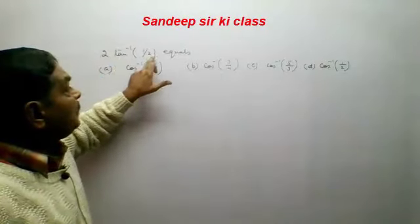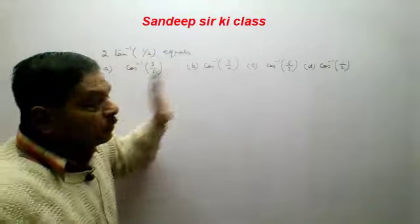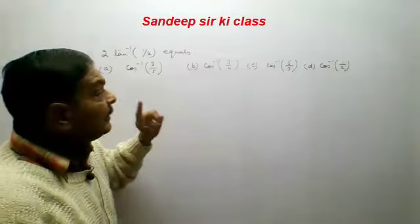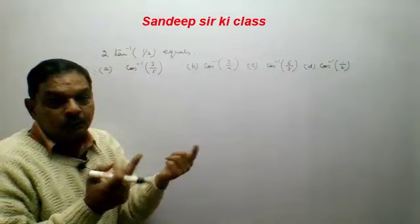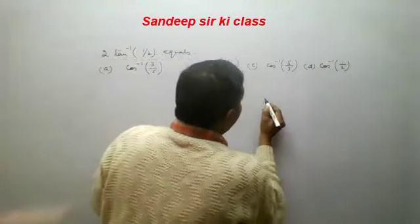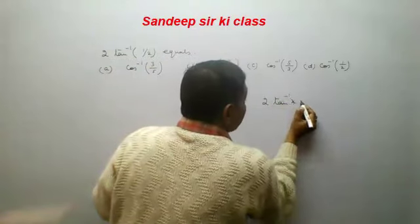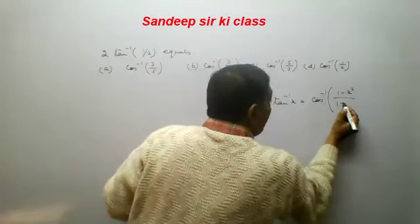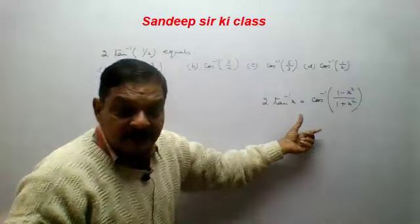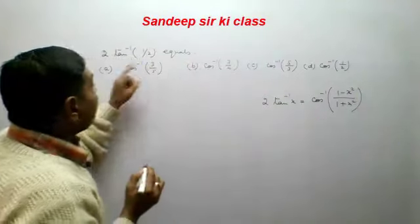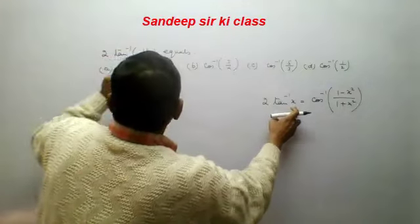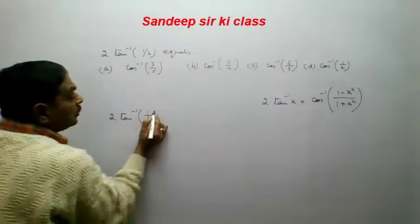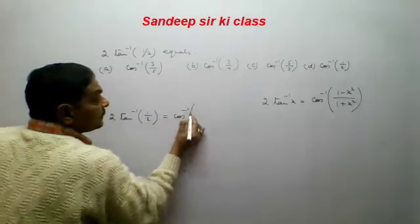The next question is to evaluate 2tan⁻¹(1/2). All the options are in cos⁻¹ form, so we need to convert tan⁻¹ into cos⁻¹. The formula from inverse trigonometry is: 2tan⁻¹(x) = cos⁻¹((1 - x²)/(1 + x²)). Here x = 1/2.